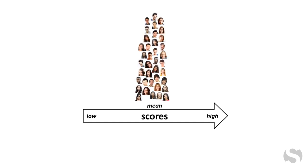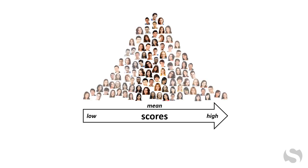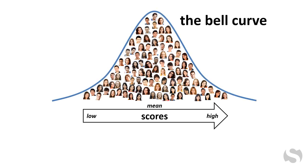If a test is given to enough people, a particular pattern will emerge. Most people will earn scores on or close to the average or mean, with fewer earning scores at either of the extremes above or below the mean. This resulting shape is called the bell curve.